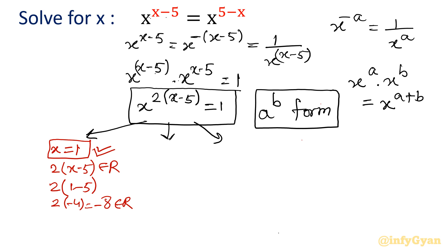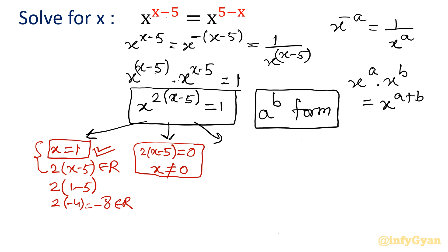Case 2: exponent is 0, with the condition that the base is non-zero. Setting 2(x−5) = 0 gives x = 5, and 5 is non-zero. So x = 5 is a complete solution from Case 2.